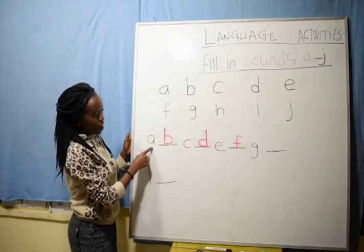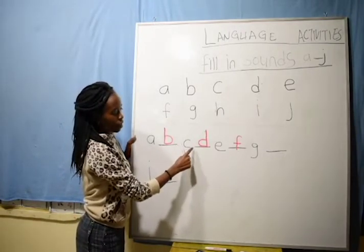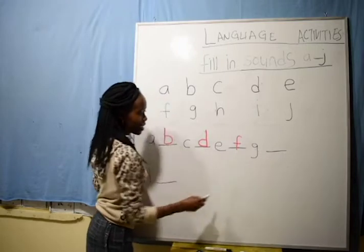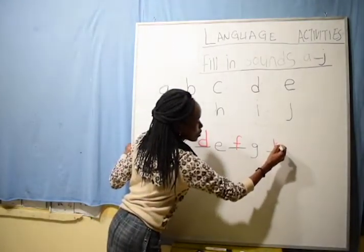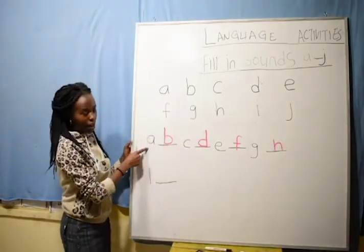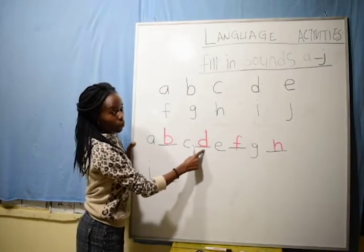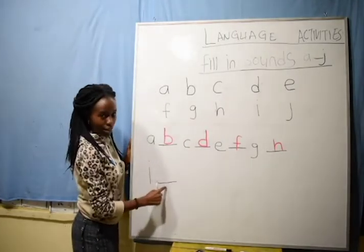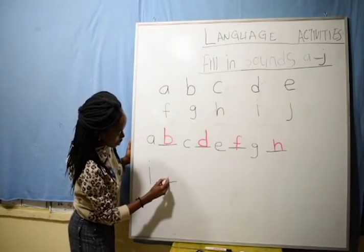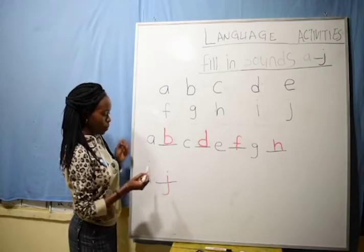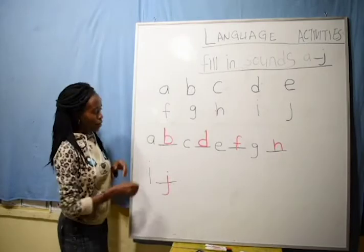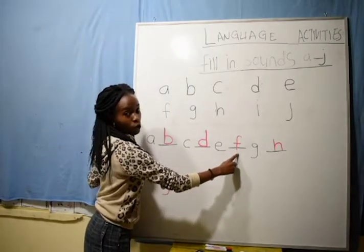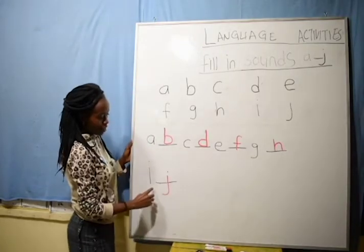Let's start reading again: A, B, D, E — very good. We have H here. Very good. We start again: A, B, D, E, F, G, H, I, J. Very good. Let's read again once more: A, B, D, E, F, G, H, I, J. Very good.